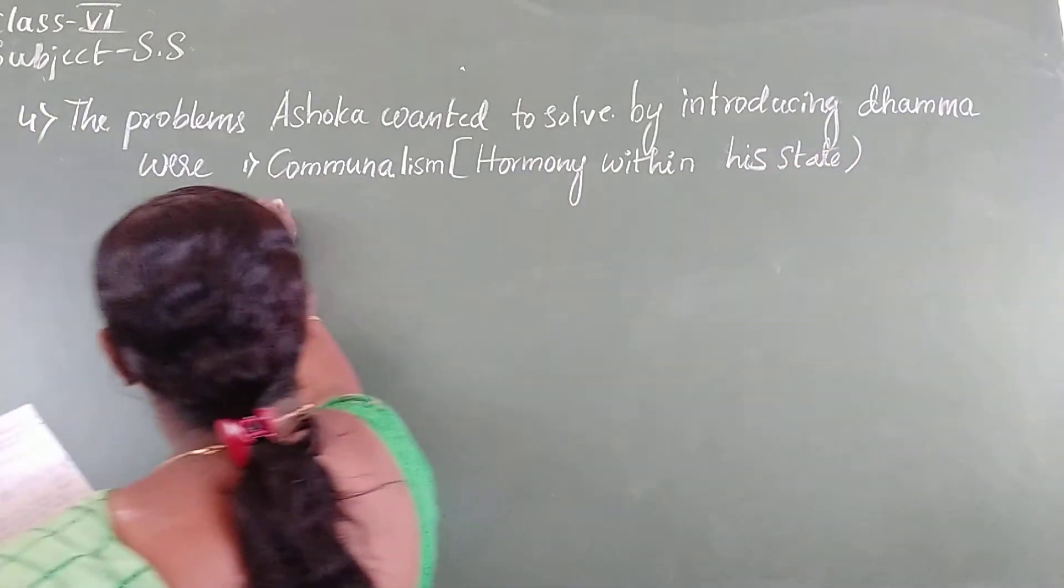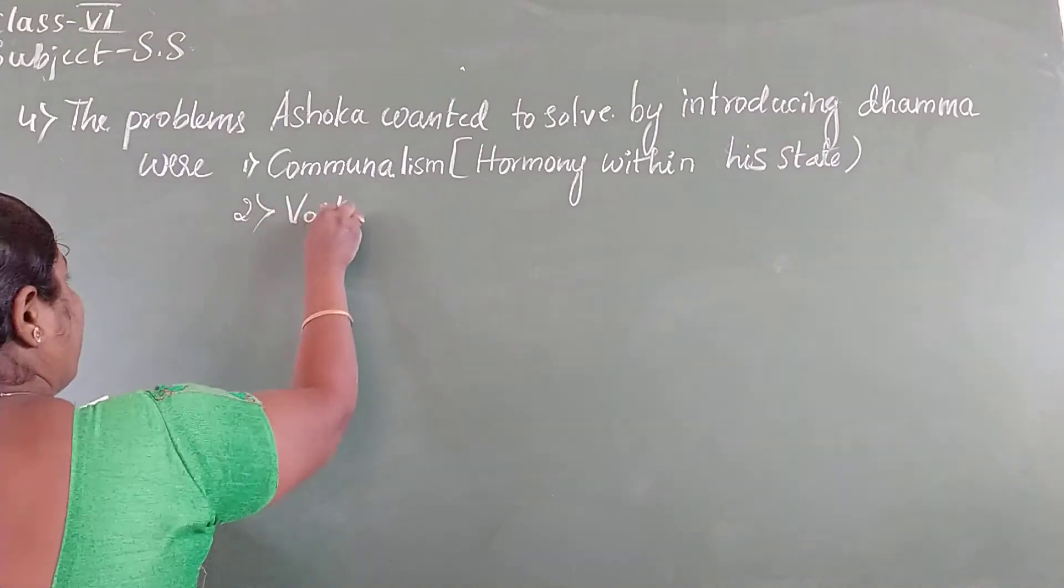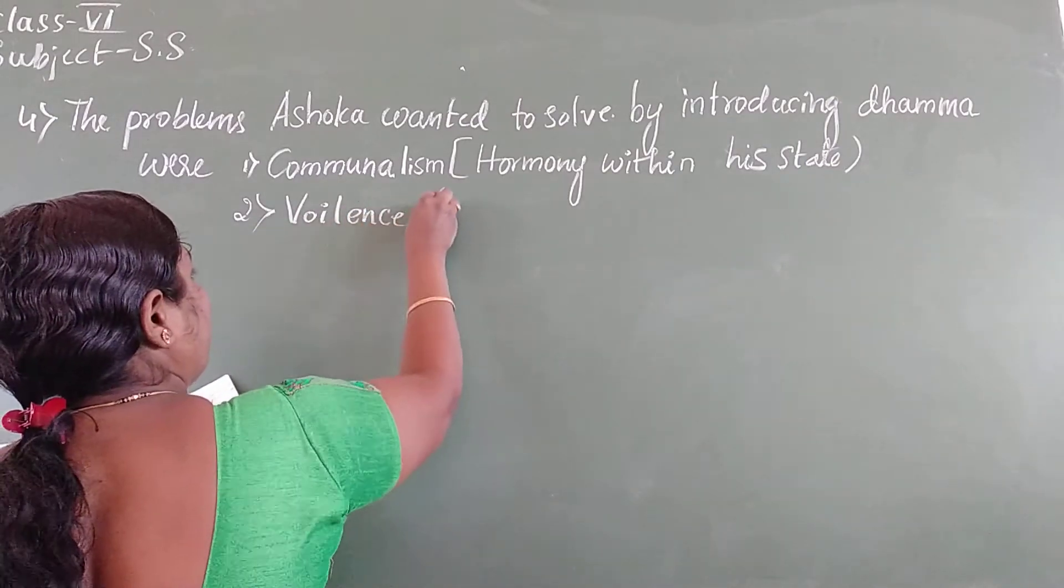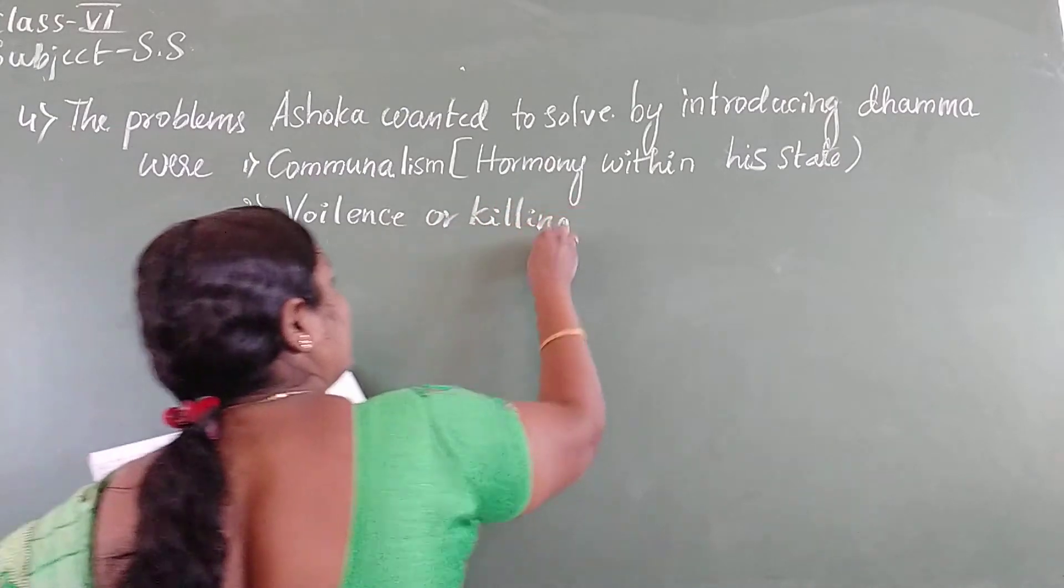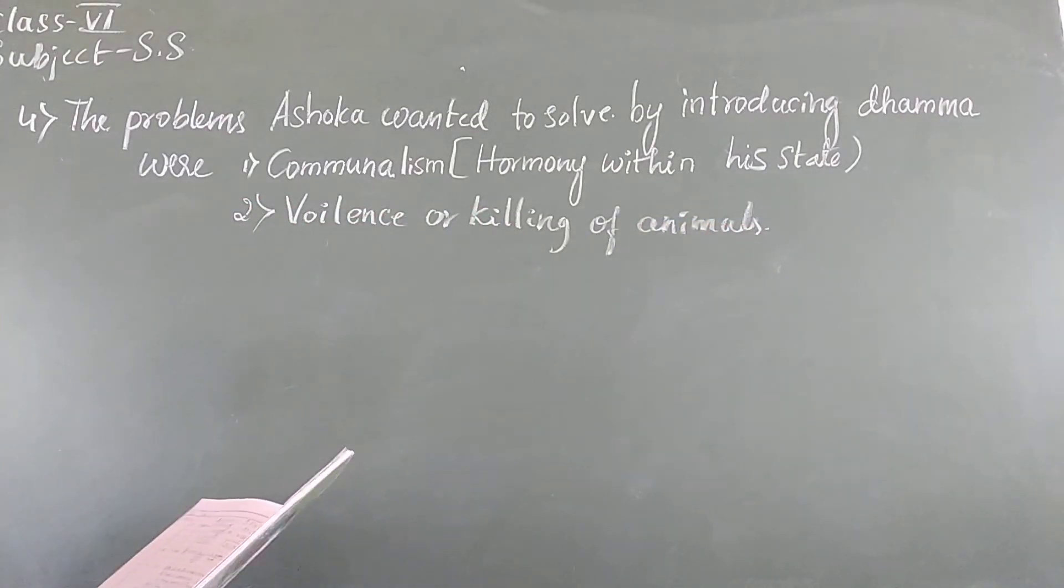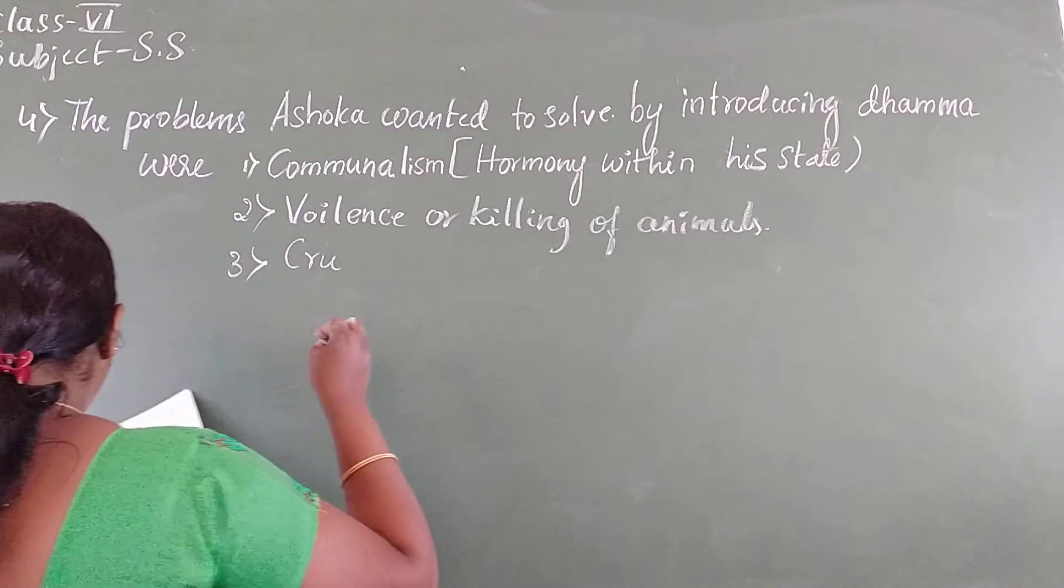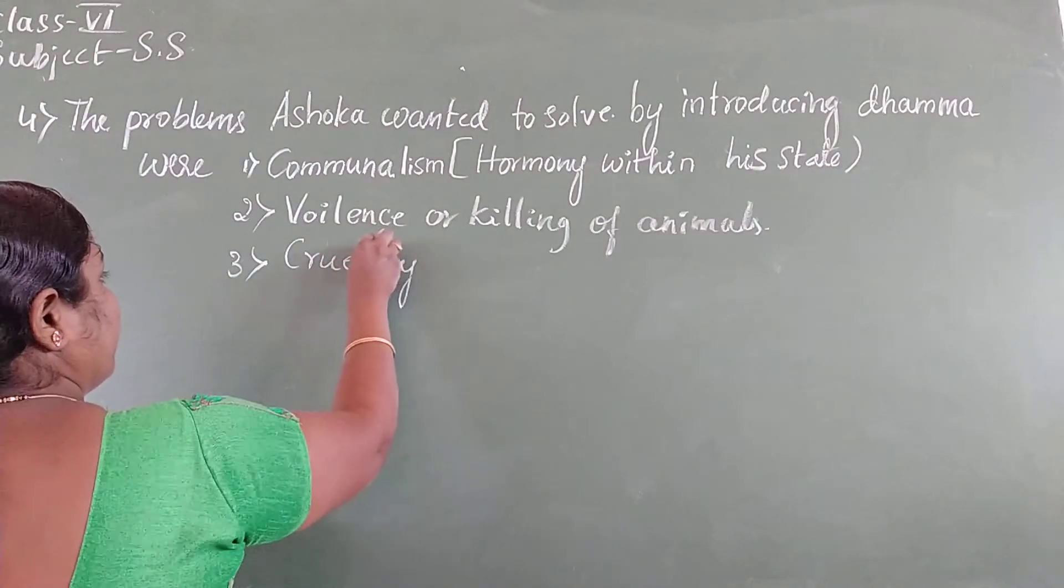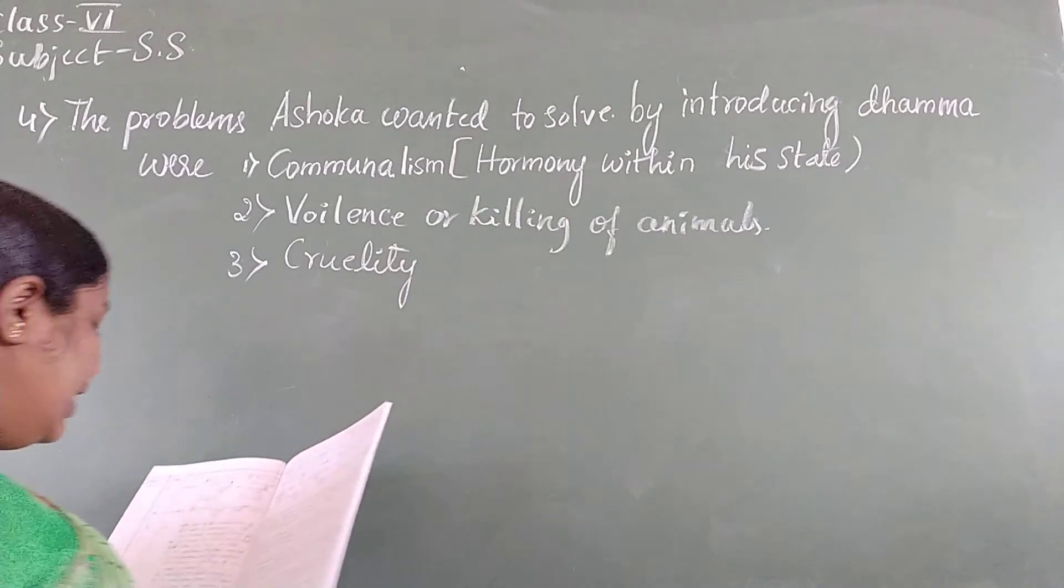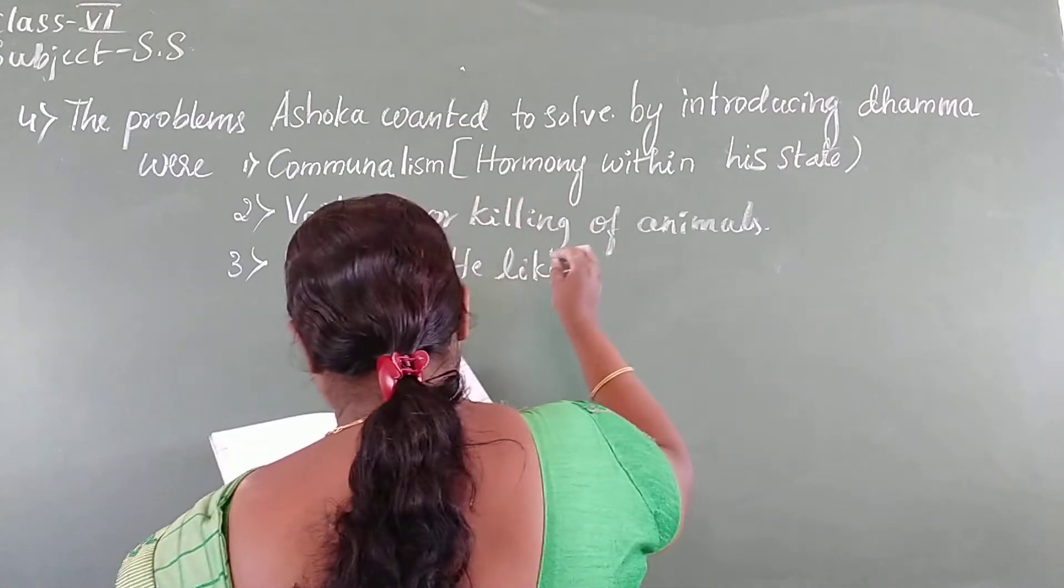Second one, violence or killing of animals. He wanted animal protection or non-violence. Third one, cruelty. He wanted to remove cruelty. He liked mercy.